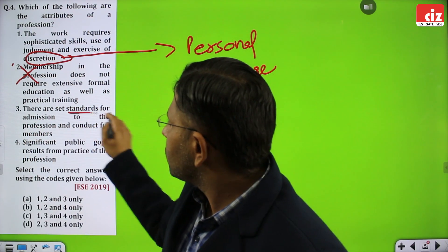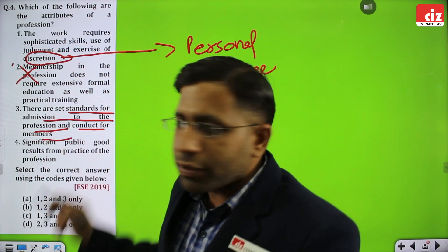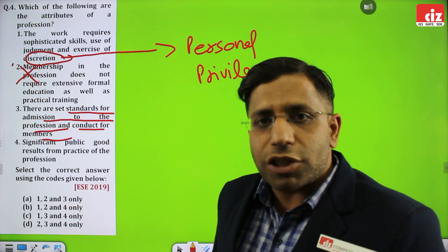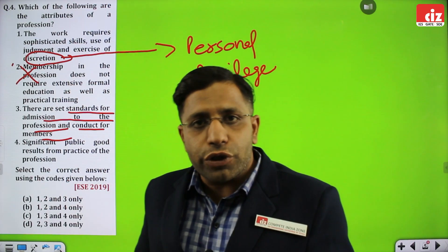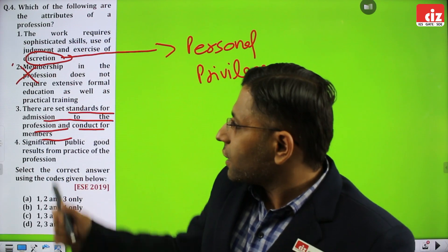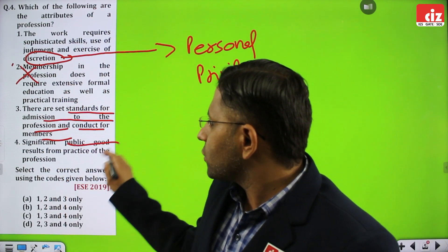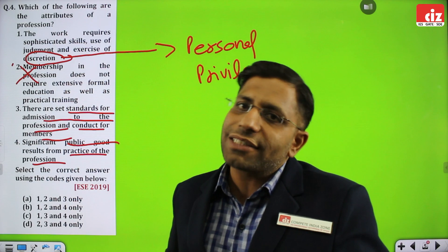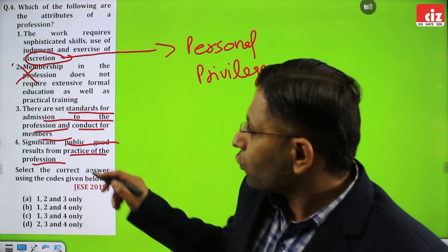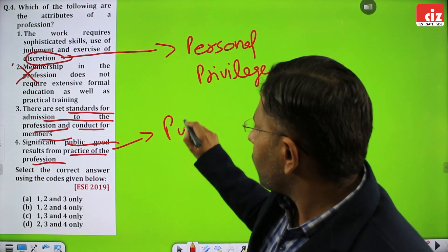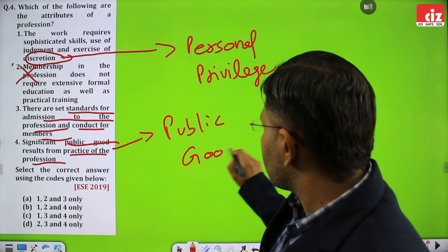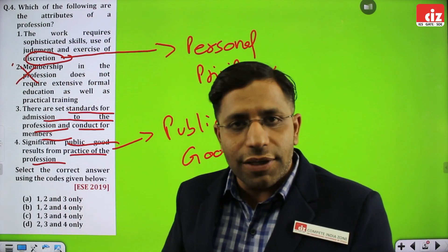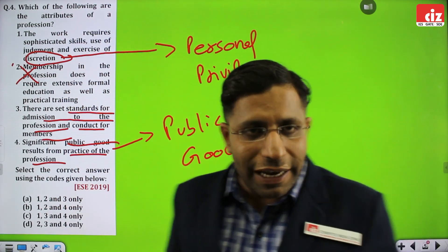Statement 3: there are set standards for admission to the profession and conduct of the members. Whenever an engineering professional enters into services, as per the UPSC pattern, there are certain principles which are to be followed and adhered to. Statement 4: significant public good results from the practice of the profession. Welfare of people is the utmost focus of government as well as public servants. The person has to work for the public good and address the problems of the people while in their job. Hope this is clear. Let us proceed with the next one.